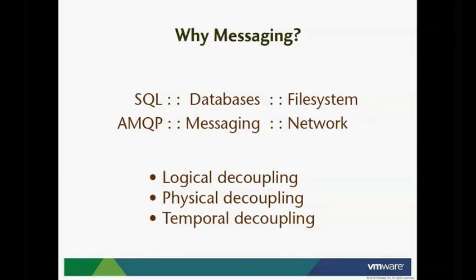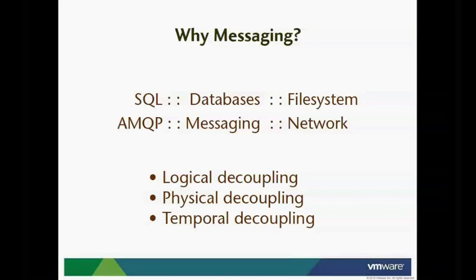Physical decoupling is when the producer and the consumer are in completely different locations — I'm in London and you might be somewhere in France or elsewhere in Europe, since this is the European session. Temporal decoupling would be if you listen to the recording of this webinar in a couple of weeks' time — the message was sent today on the 8th of December and you might be listening to it on some future day. So messaging is to the network what databases are to the file system, and AMQP is to messaging what SQL is to databases.